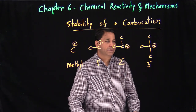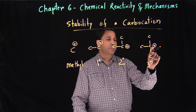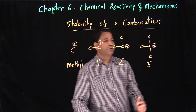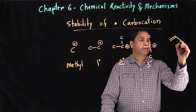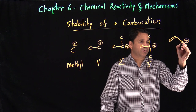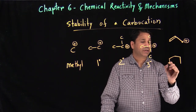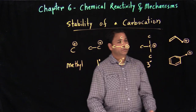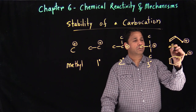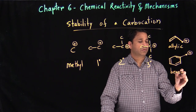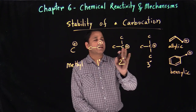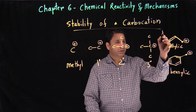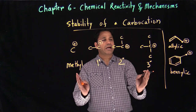We also have two more types of carbocations. You can have a carbon with a double bond adjacent and a positive charge — this is called an allylic carbocation. And similarly with a benzene ring — that is a benzylic carbocation. So the different types are: methyl, primary, secondary, tertiary, allylic, and benzylic.